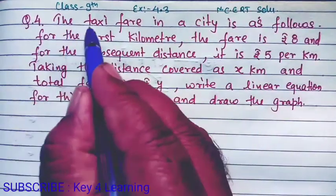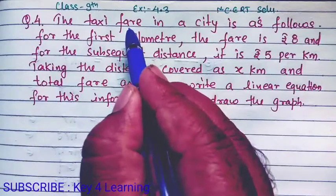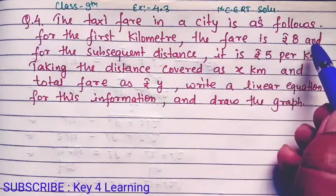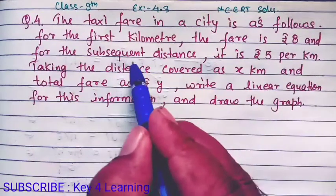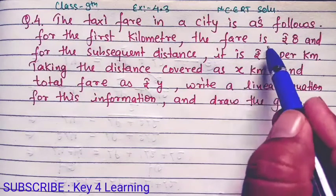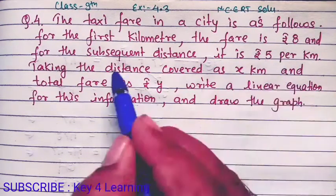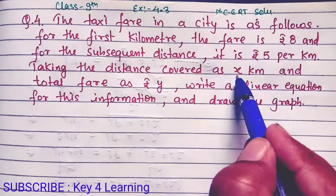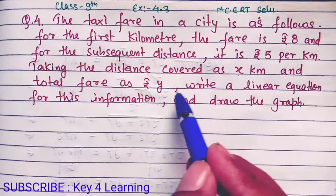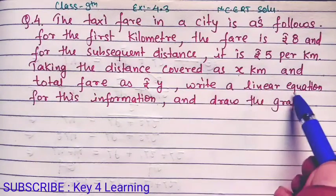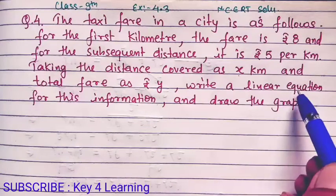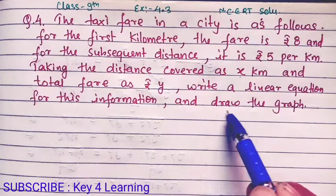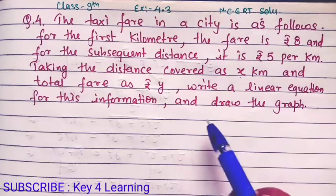तो question में कहा गया है कि एक city का taxi fare इस तरह से बताया गया है कि पहले 1 kilometer के लिए 8 रुपए पे करने पड़ते हैं, जबकि उसके बाद के हर kilometer के लिए 5-5 रुपए पे करने पड़ते हैं। यदि distance covered को x मान लें और total fare को y मानें, तो इस information के लिए एक linear equation लिखकर बताइए और फिर उस linear equation के लिए एक graph draw कीजिए।